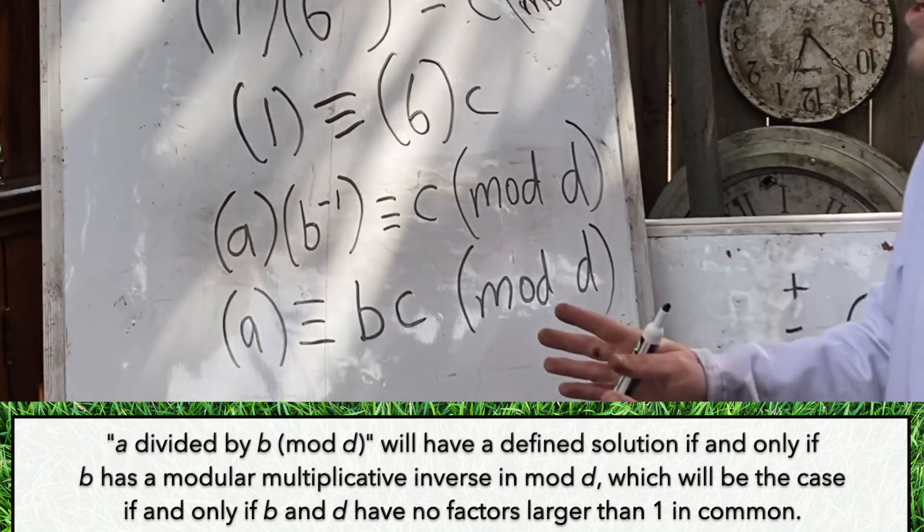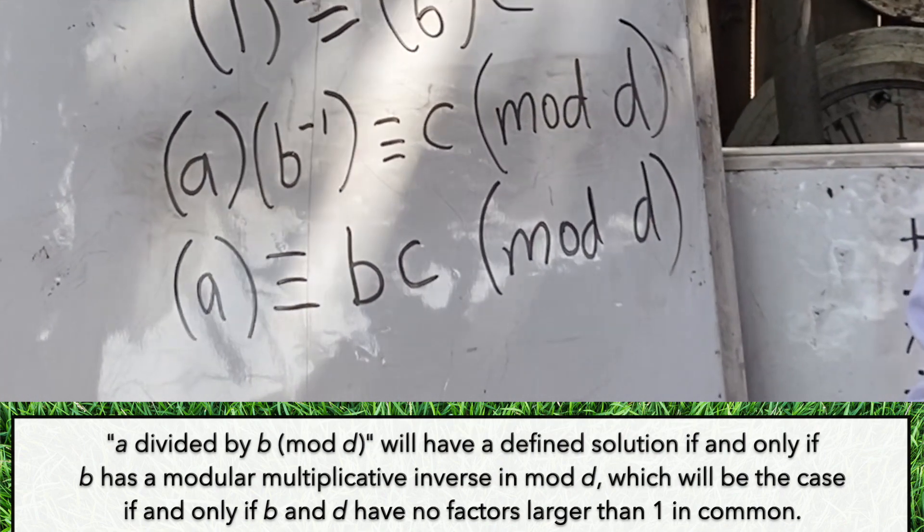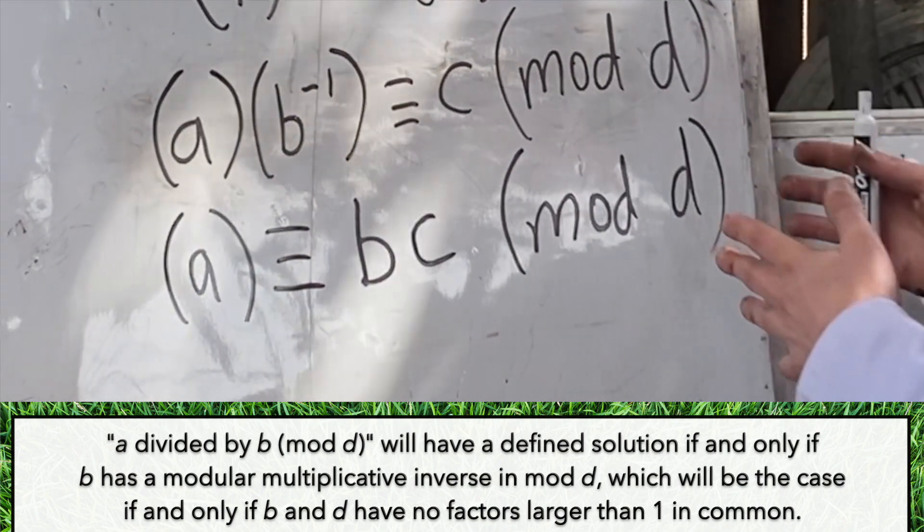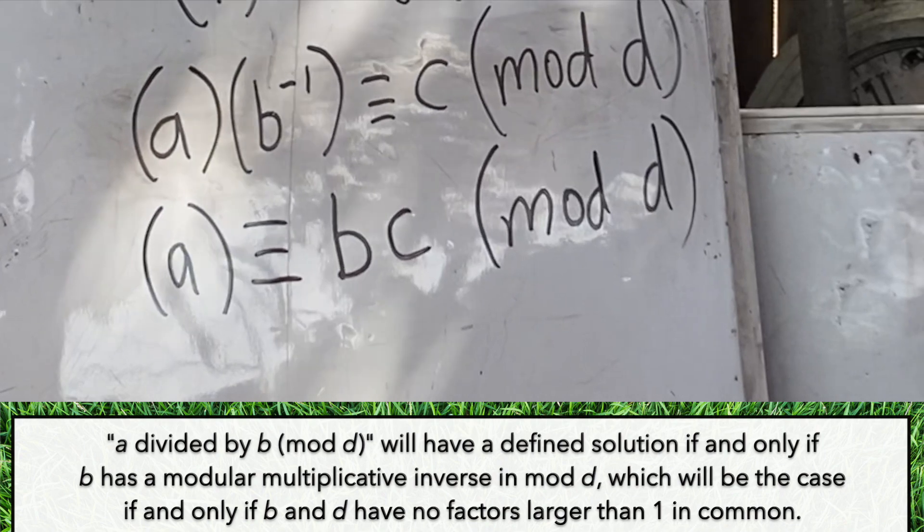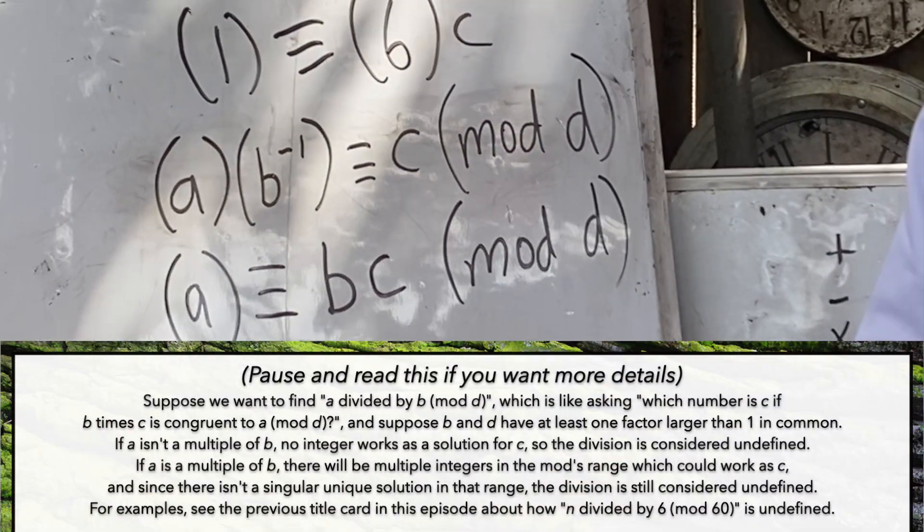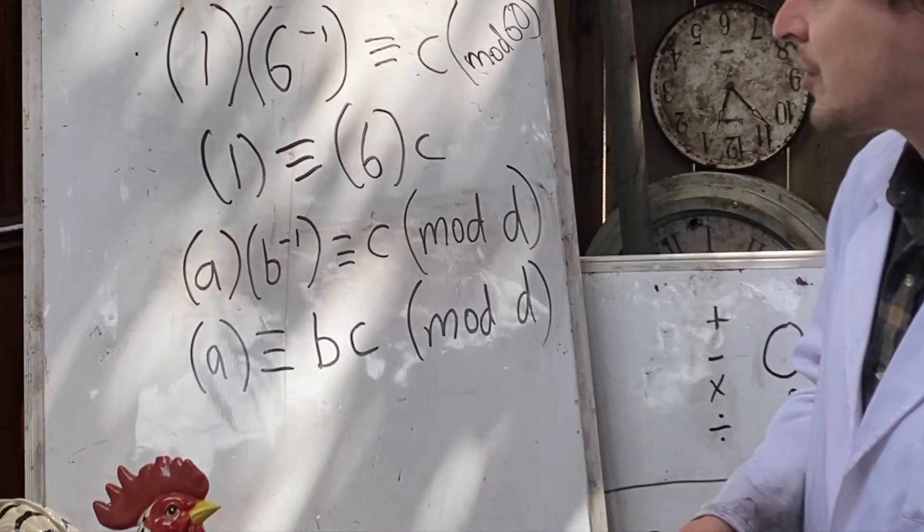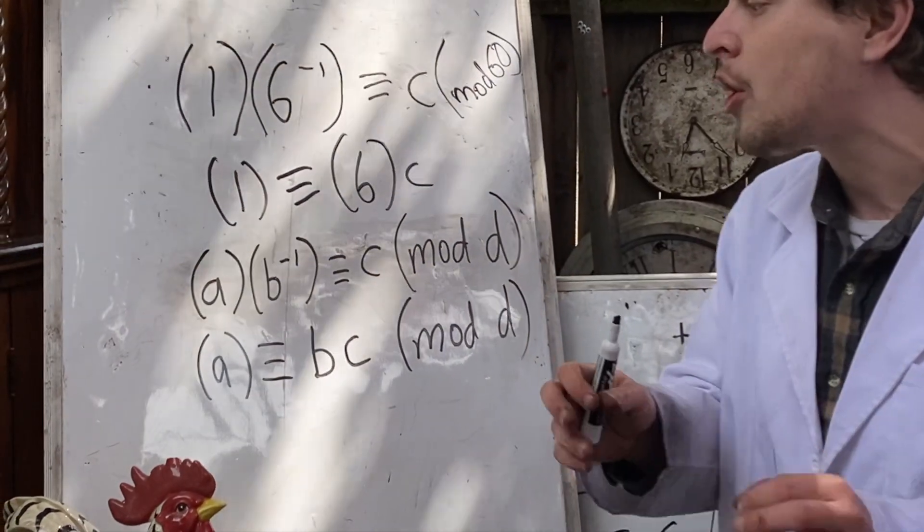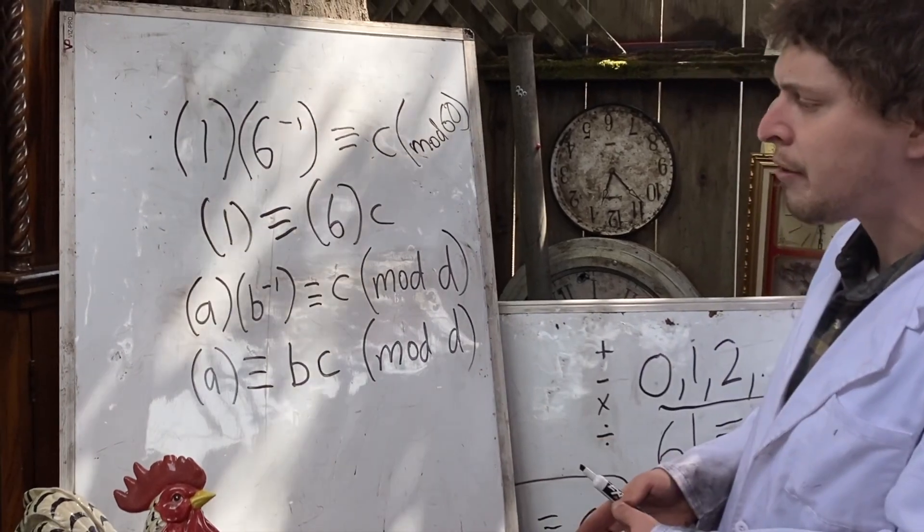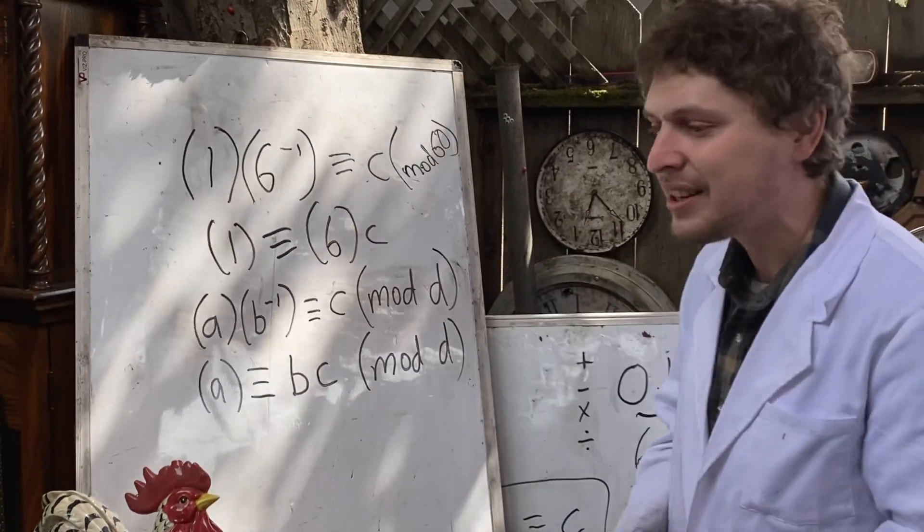The times when this will have a solution are exactly the cases where this b number and this d number are co-prime or have no factors greater than 1 in common. And that's why I chose divided by 7 as my main example, because 2, 3, 4, 5, and 6 have factors in common with 60, and I wouldn't have been able to take 1 divided by them. However, 7 has no factors greater than 1 in common with 60. 7 and 60 are co-prime, sometimes also called relatively prime to each other. And that lets me divide anything by 7 in this mod.